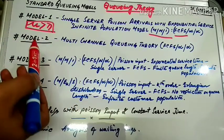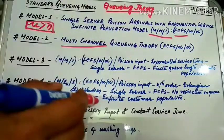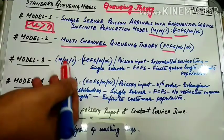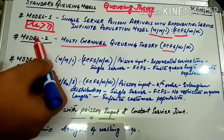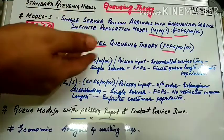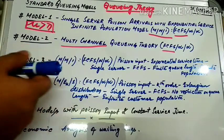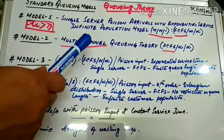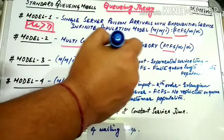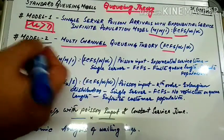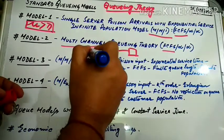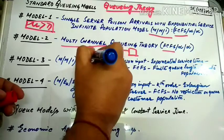Now coming to model 2 — multi-channel queuing theory, also with FCFS discipline. This model is applicable where there are several servers, i.e., multi-server or multi-channel. These servers are arranged in parallel, and each unit in the waiting line can be served by any one of them. I have already shown in previous videos what parallel servers and series servers look like.